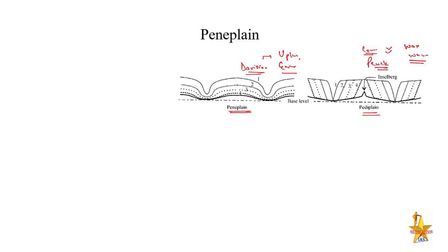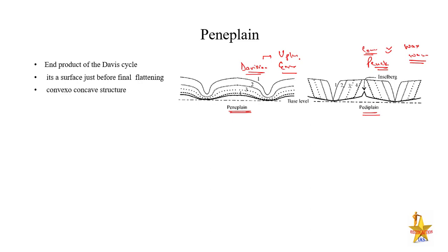In a short note on Peneplain: Peneplain is a product of Davis's cycle. It is the surface just before final flattening — when the landscape is about to become completely flat, that stage is known as Peneplain. It is actually a convexo-concave structure with Monadnocks on top. This is the last phase of fluvial action of the river.